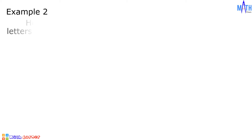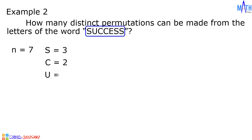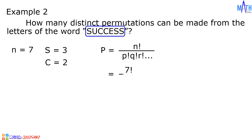Example number 2. How many distinct permutations can be made from the letters of the word success? The word success has 7 letters, so the value of n is 7. S appears 3 times, C appears 2 times, U appears 1 time, and E appears 1 time. Using the formula, we have 7 factorial over 3 factorial times 2 factorial.